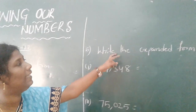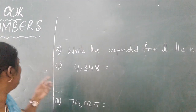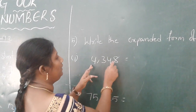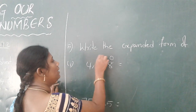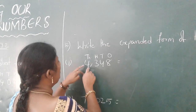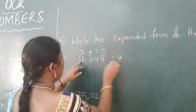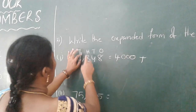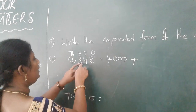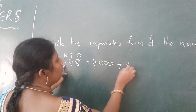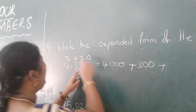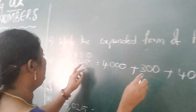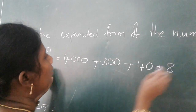Now move to the last model: write the expanded form of the number. The short form is given and we write the expanded form. Take the number 4,348. Place values: ones, tens, hundreds, thousands. Thousands place value is 4, so 4,000. Hundreds place value is 3, so 300. Tens place value is 4, so 40. Ones place is 8. So the expanded form is 4,000 + 300 + 40 + 8.